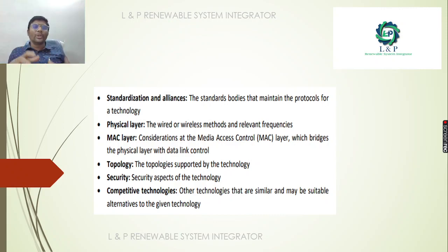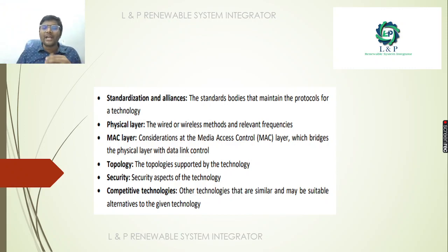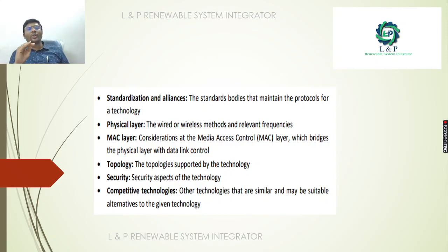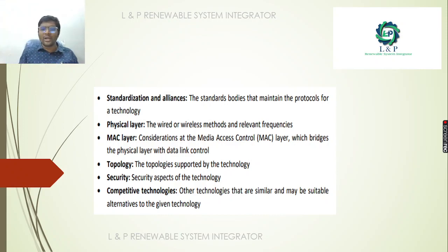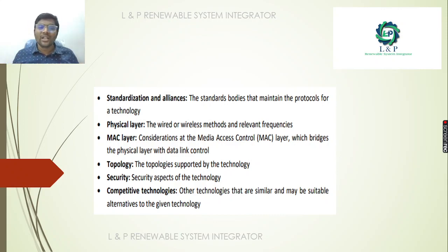Why are we going for standardization and alliances? In order to maintain the protocol for a particular technology, we need standard bodies. What is the purpose of the physical layer? Why do we need the MAC layer, topology, security, and competitive technologies? Simply put, if you want to do any sort of networking, you can use only two methods: either a wired network or a wireless network. For that, you definitely need a physical layer.